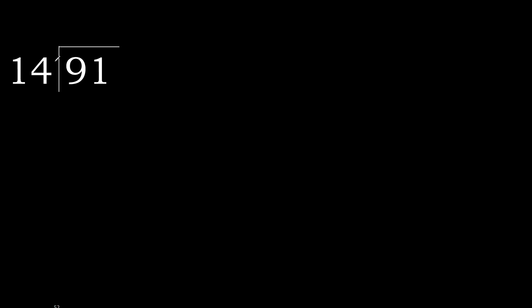14 multiplied by 6 is 84. 84 is not greater, so multiply by 6, giving 84. 84 is not greater — ok. Subtract: 91 minus 84 equals 7.